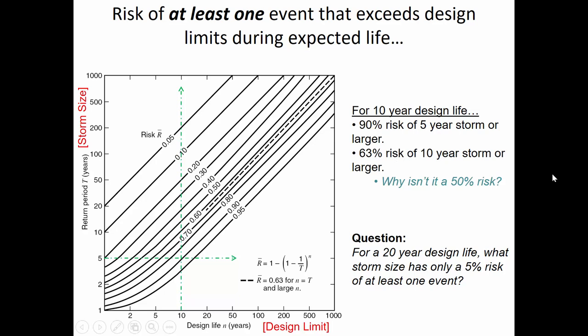Starting with the horizontal axis — a 20-year design life — go straight up to intersect the 5% risk curve. Then moving over sideways, it looks like that's pretty close to the 500-year storm. So in words: there's a 5% risk of the 500-year storm or larger occurring during a 20-year design life.